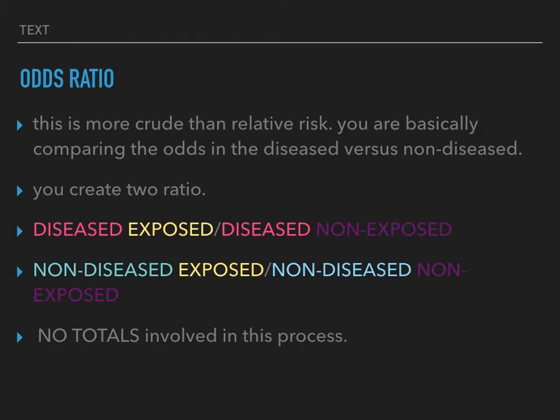The odds ratio is more crude than relative risk. You are basically comparing the odds of having been exposed in the diseased versus the non-diseased. You create two ratios: the first is the diseased-exposed over the diseased-not-exposed; the second is the non-diseased-exposed over the non-diseased-not-exposed. Notice that there are no totals involved in this process.